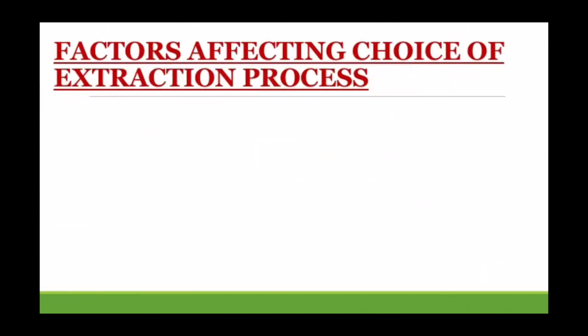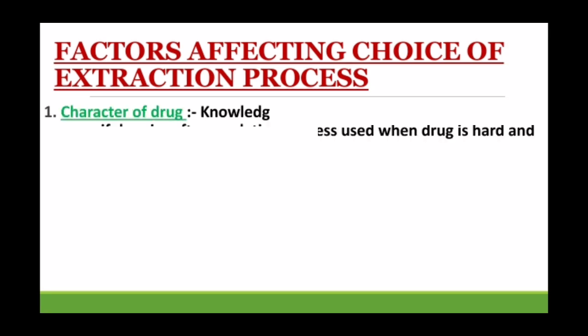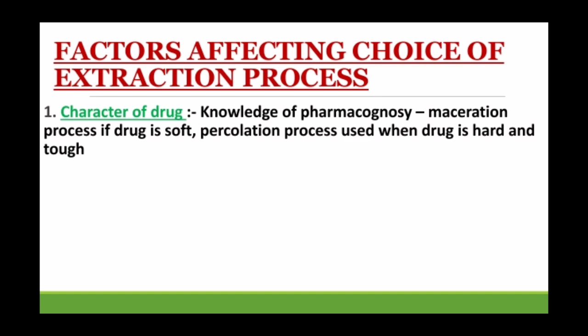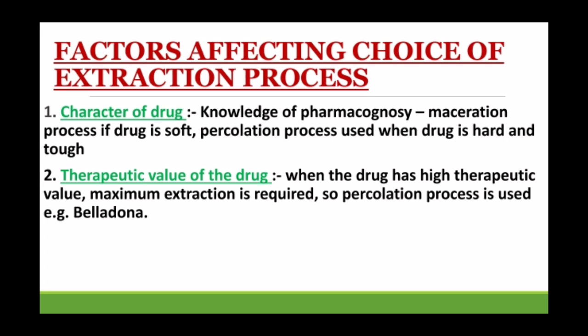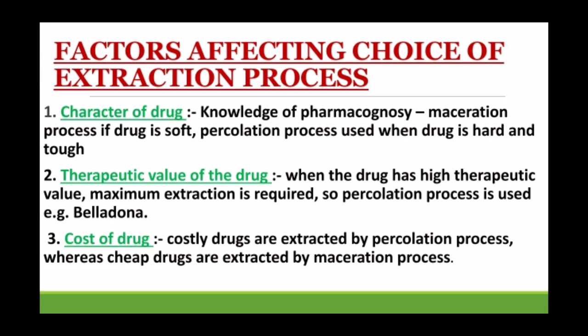Now let's discuss factors affecting the choice of extraction process. The first factor is the character of the drug — we need pharmacognosy knowledge of the drug. If the drug is soft, we use maceration, but if it is hard and tough, we use percolation. The second factor is the therapeutic value of the drug — if the drug has high therapeutic value and requires maximum extraction, we use percolation. For example, in the case of belladonna, we use percolation.